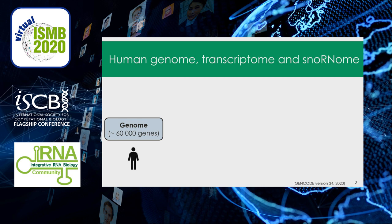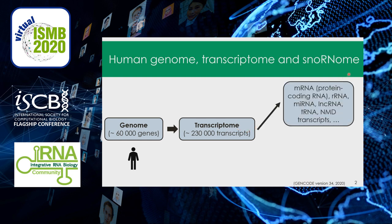The human genome is composed of about 60,000 genes, which through transcription give rise to around 230,000 transcripts to form the transcriptome. These transcripts can either be coding for proteins, such as messenger RNA, or non-coding, such as ribosomal RNA, non-coding RNA, and so on.